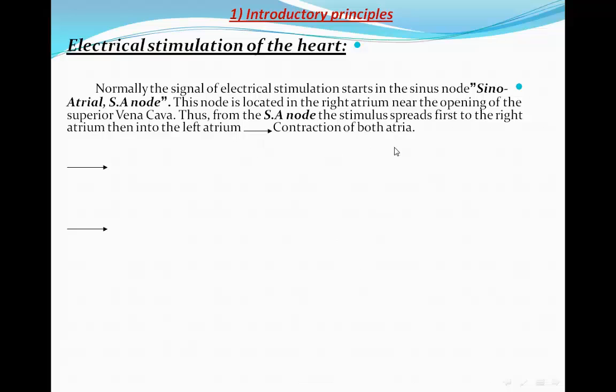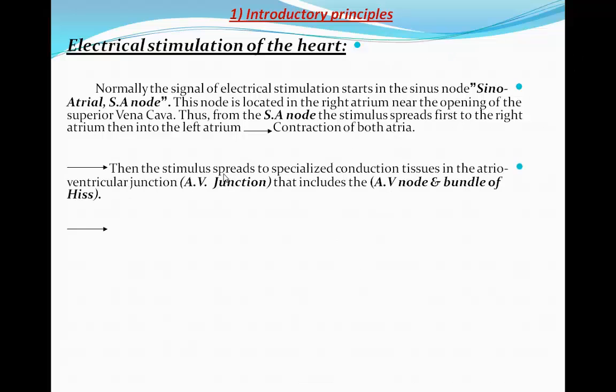The SA node starts the firing of the impulse. The impulse will depolarize the right atrium and then go through the inter-atrial septum to depolarize the left atrium, and then contraction will ensue.